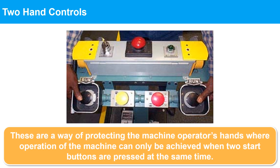Two-hand controls are a way of protecting the machine operator's hands, where operation of the machine can only be achieved when two start buttons are pressed at the same time. For example, two-hand controls on a click press — the operator is at risk of crushing injury if the press operates when their hand is between the top and bottom plates.